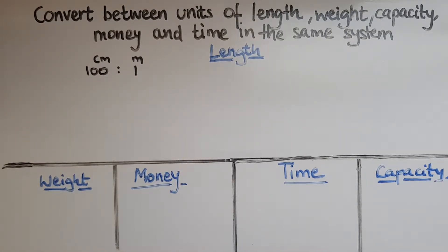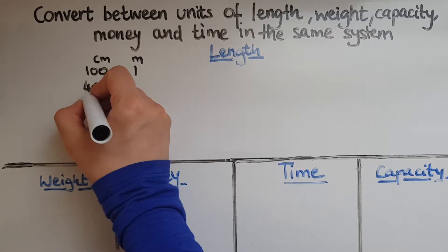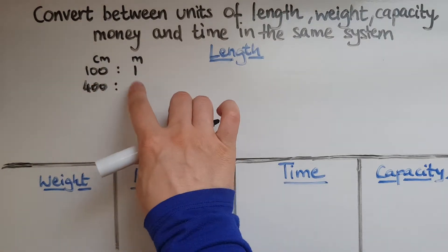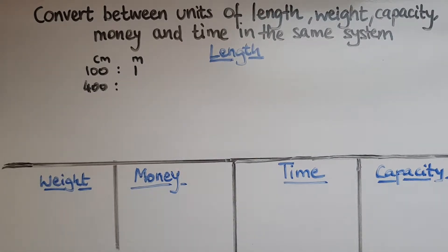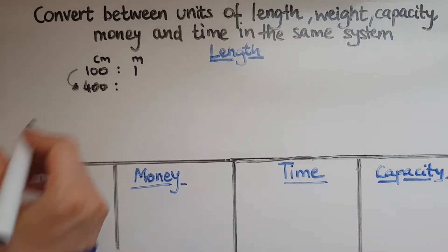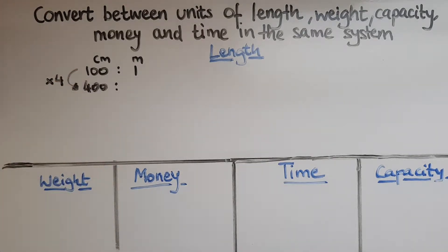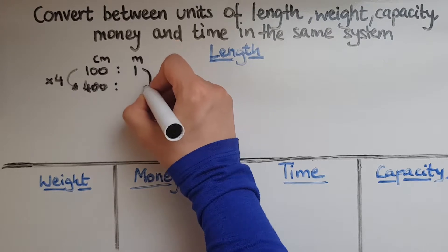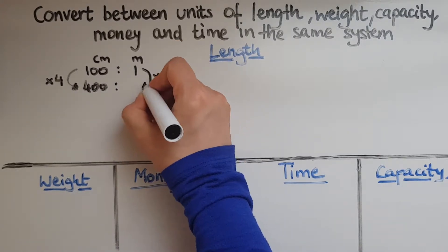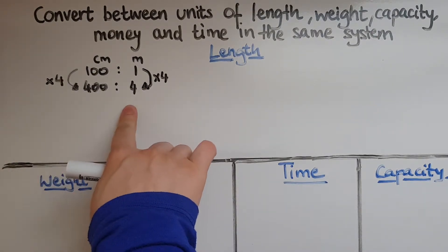So now I want to convert 400 centimeters into meters. Which one do I know? I know how many centimeters I have, so 400 centimeters, and we'll convert that into meters. Now I'll look at how many hundreds fit into 400, and that is 4 of them. So I've multiplied 100 by 4 to get 400, so I'll do the same with meters. I'll multiply 1 by 4 to get 4. So 400 centimeters is equal to 4 meters.